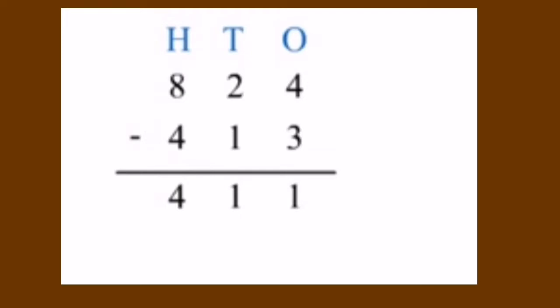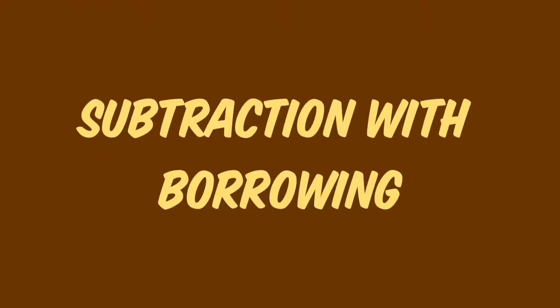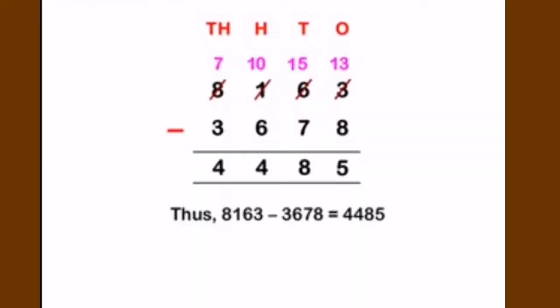Next is subtraction with borrowing. Let us take an example: 8163 minus 3678. We start from the ones place. In the ones place there are 3 and 8; since 3 is less than 8, we borrow from the tens place. The tens place has 6, so we borrow 1 from it, making the ones place 13.